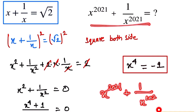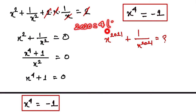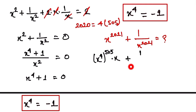Now we look at the main expression: x^2021 + 1/x^2021. We notice that 2020 can be written as 4 × 505. So we break this as x⁴ raised to the power 505, times x, plus 1 over x⁴ raised to the power 505, times x.